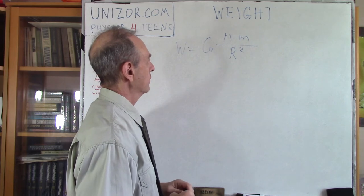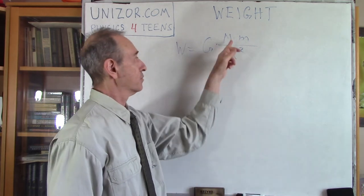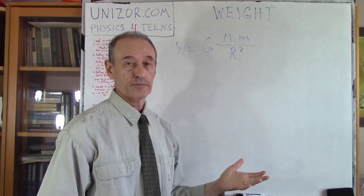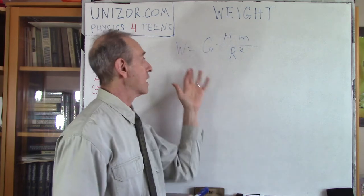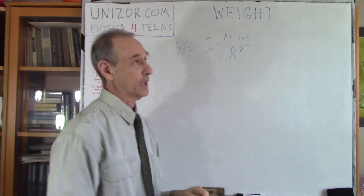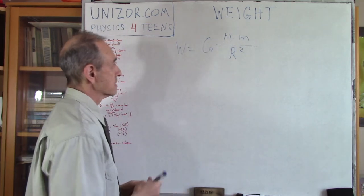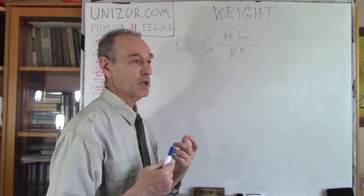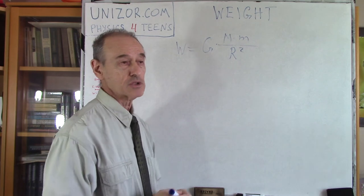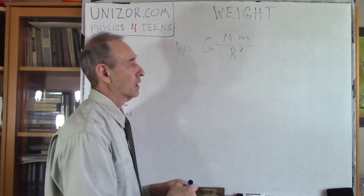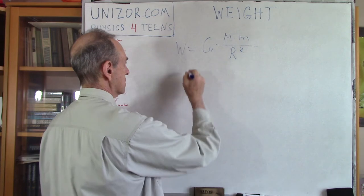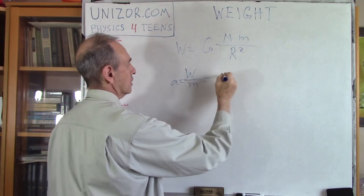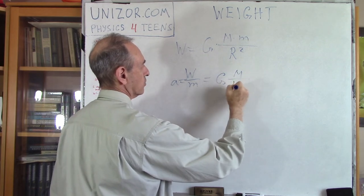Different planets with different mass M and radius R attract the same object M differently. That's why the weight is different — it depends on the planet. From this, since we know the weight, we can determine the acceleration of free-fall on the surface of this particular planet. It's W divided by M — the acceleration — and it equals G times the planet mass divided by R squared.